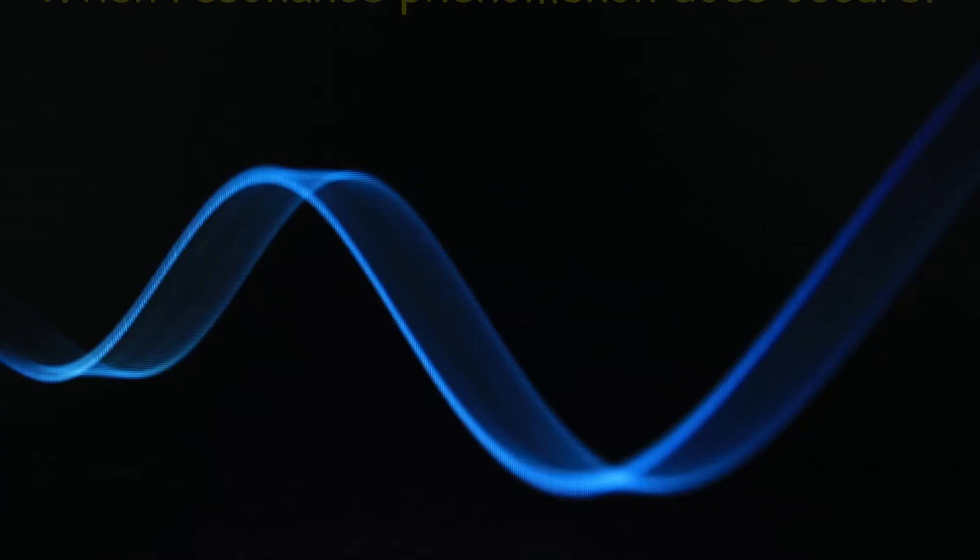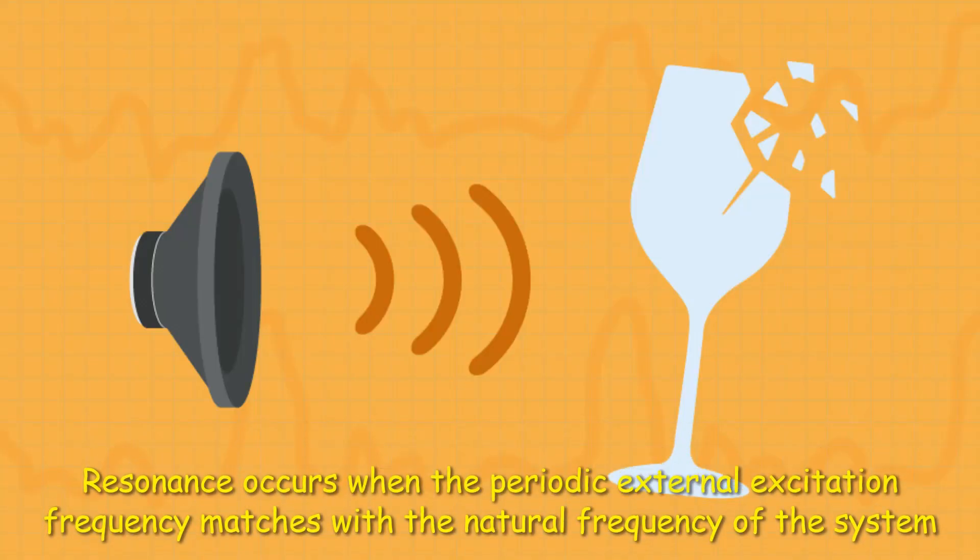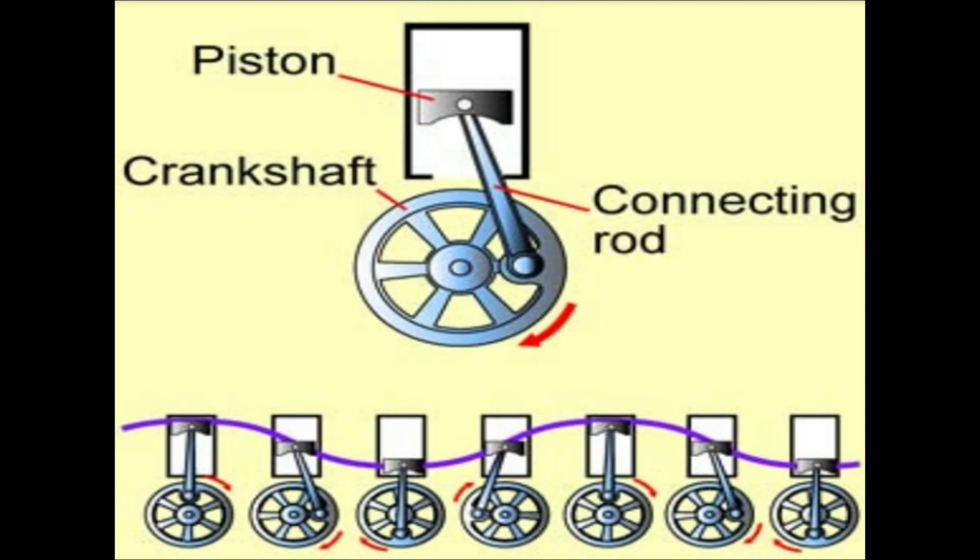Our next question is: when does resonance phenomena occur? This occurs when the periodic external excitation frequency matches with the natural frequency of the system. In the present example, this happened when the engine excitation frequency matched with the glass natural frequency.